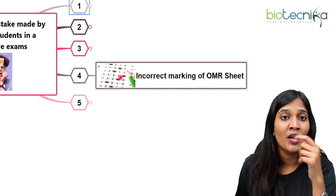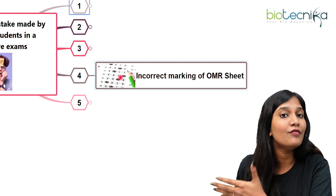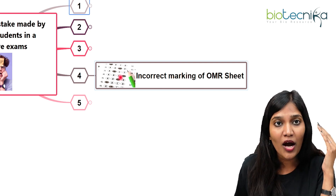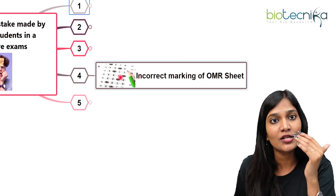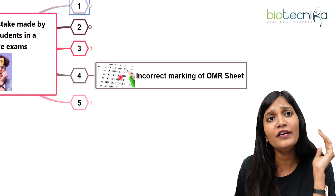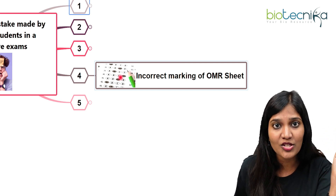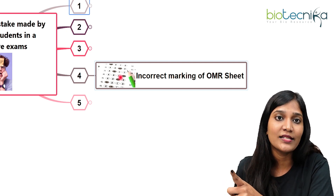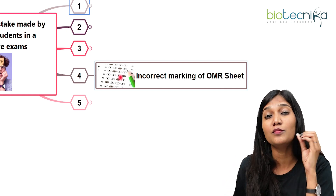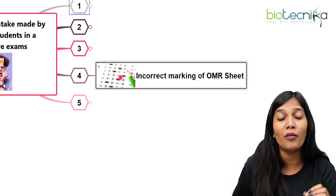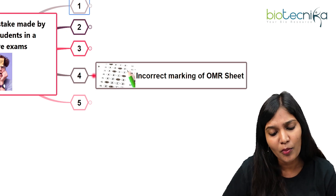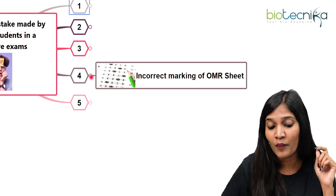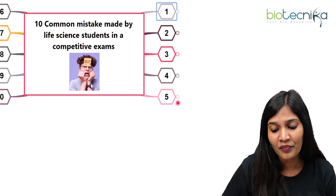Many students mark answers in the question paper but leave the OMR sheet blank for that question. Remember, it is the OMR sheet that is evaluated, not the question paper. When answering, always verify you are marking the seventh question's answer in the seventh row of the OMR sheet. This is a very common mistake that has caused students to lose marks, so take this into consideration.